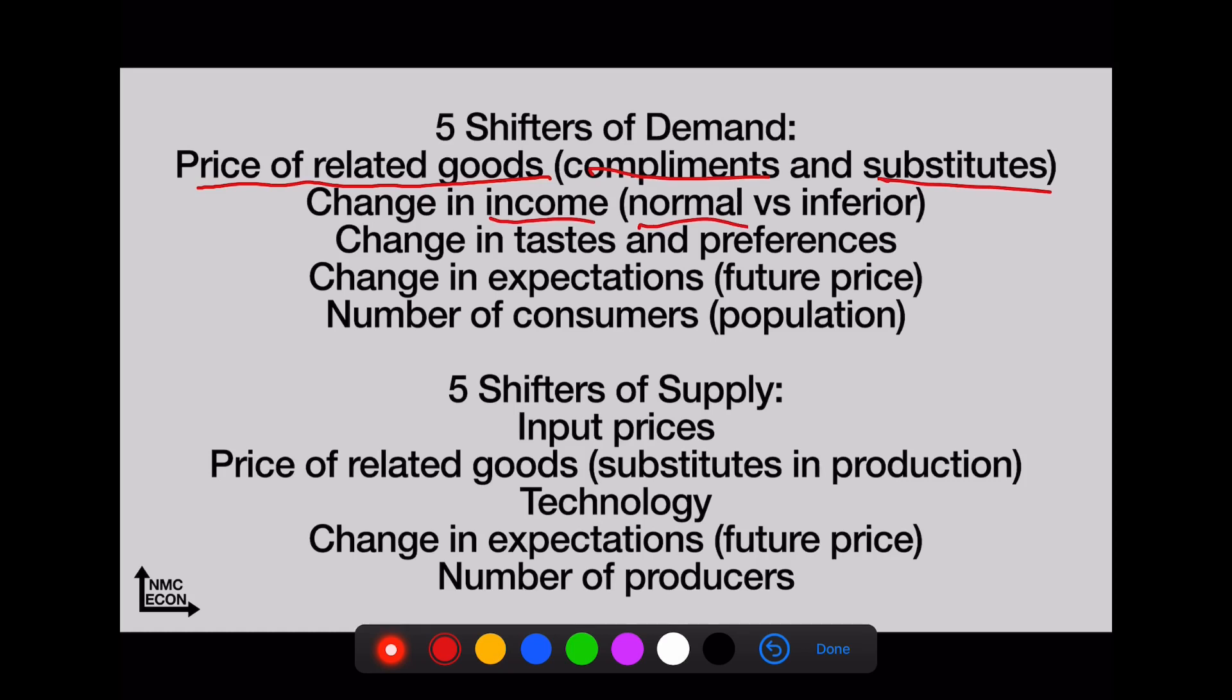Changes in tastes and preferences—this is often affected by things like advertising. Changing expectations—tricky one. It's all about the future price. If you think the good that you want to buy is going to be more expensive in the future, well you want to buy it today. You're going to demand more today, and we're always graphing today. Number of consumers—this is the population. More people, more demand.